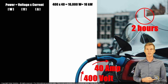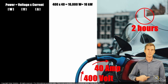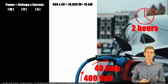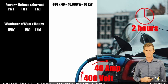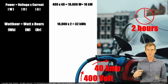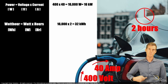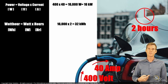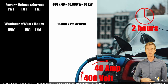Now we want to know the total amount of electrical energy that we've charged the battery with. So we take the 16,000 watts of the power rating and multiply it by the two hours. Then we know that during this charge cycle — the two hours, 40 amps, and 400 volts — we have put a total amount of electrical energy of 32 kilowatt hours, or 32,000 watt hours, into the battery of your vehicle.